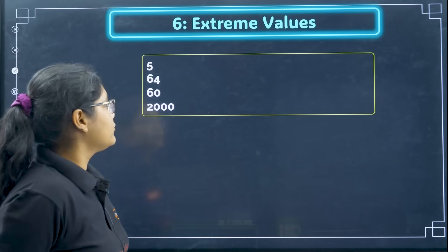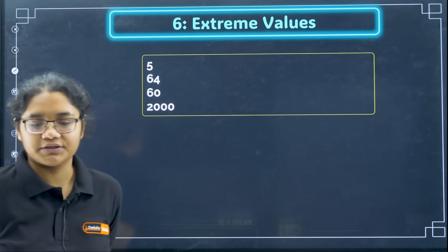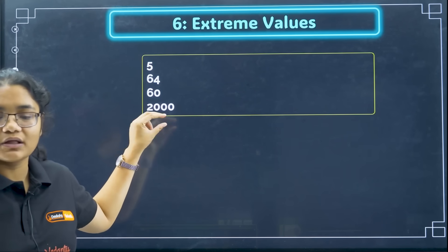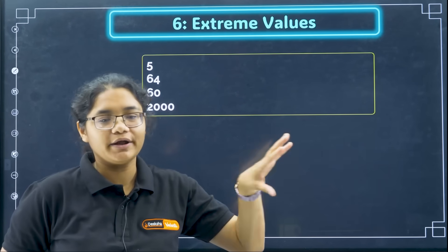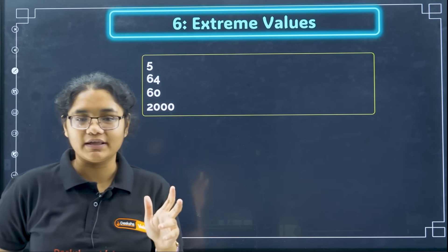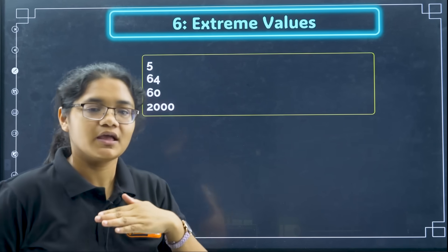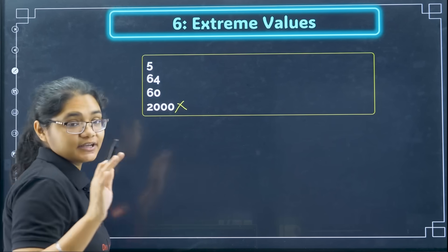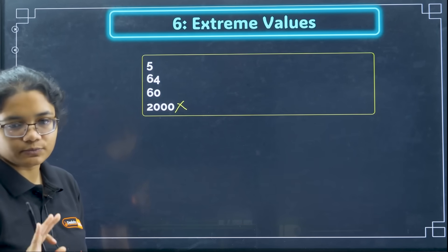Next coming to extreme value, suppose you have a question here where you see 5, 64, 60 and 2000. This 2000 is like way beyond other options. You can see 5, 60, 64 are somewhat near to each other but 2000 is something very odd value. So that will never be the answer generally, you can eliminate that option.